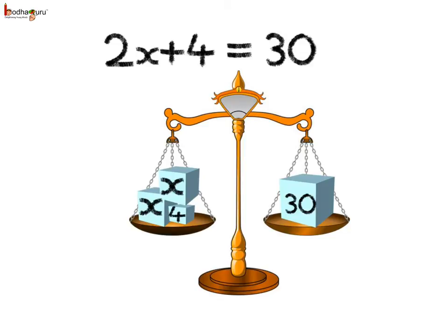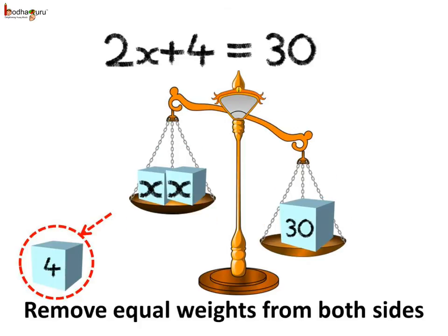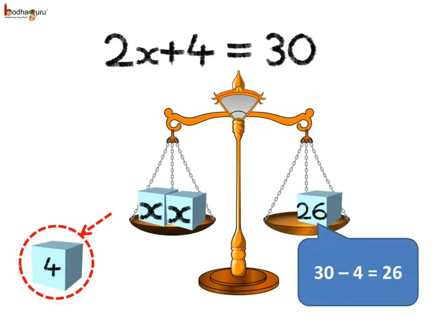Now, coming to another algebraic equation, which is 2x plus 4 equal to 30. Let us put the weight amounting to 2x plus 4 on the left hand side pan, and the weight amounting to 30 on the right hand side pan. We don't want 4, so 4 needs to be taken off — that is, 4 needs to be subtracted or removed. But remember, we have to subtract the same weight from the other pan too.